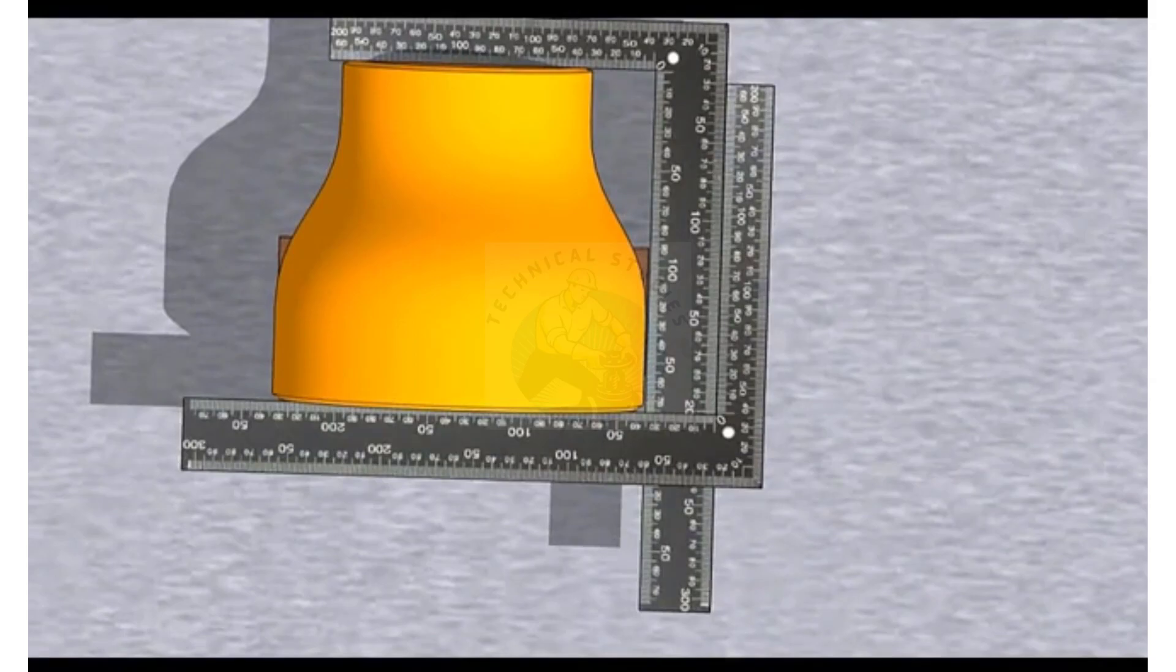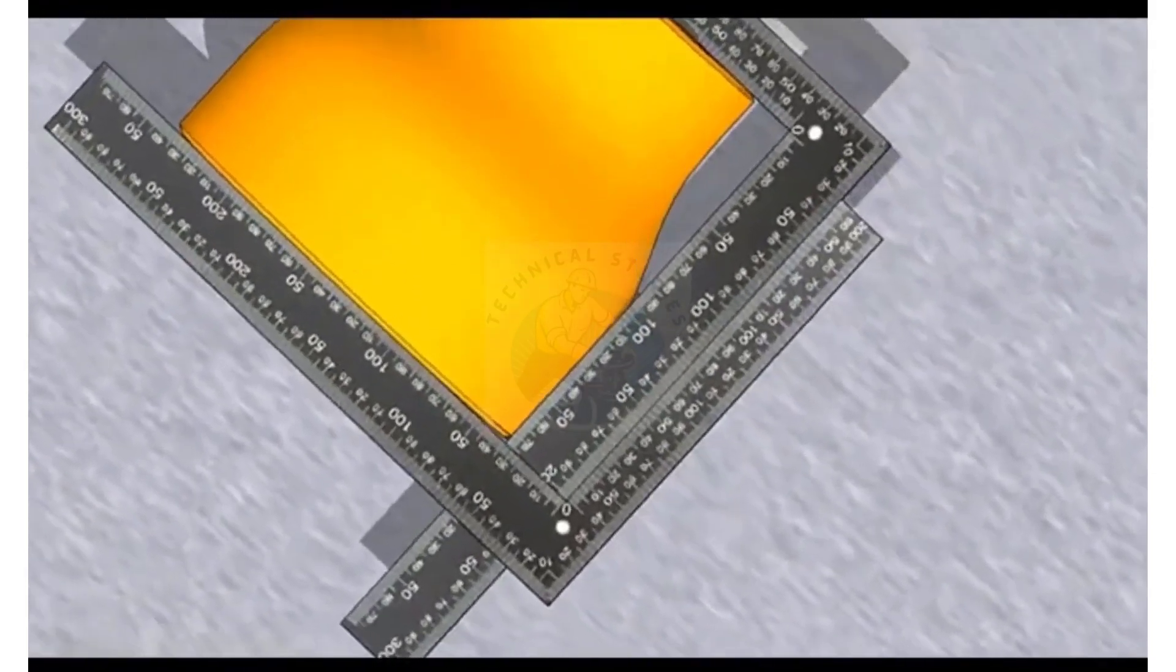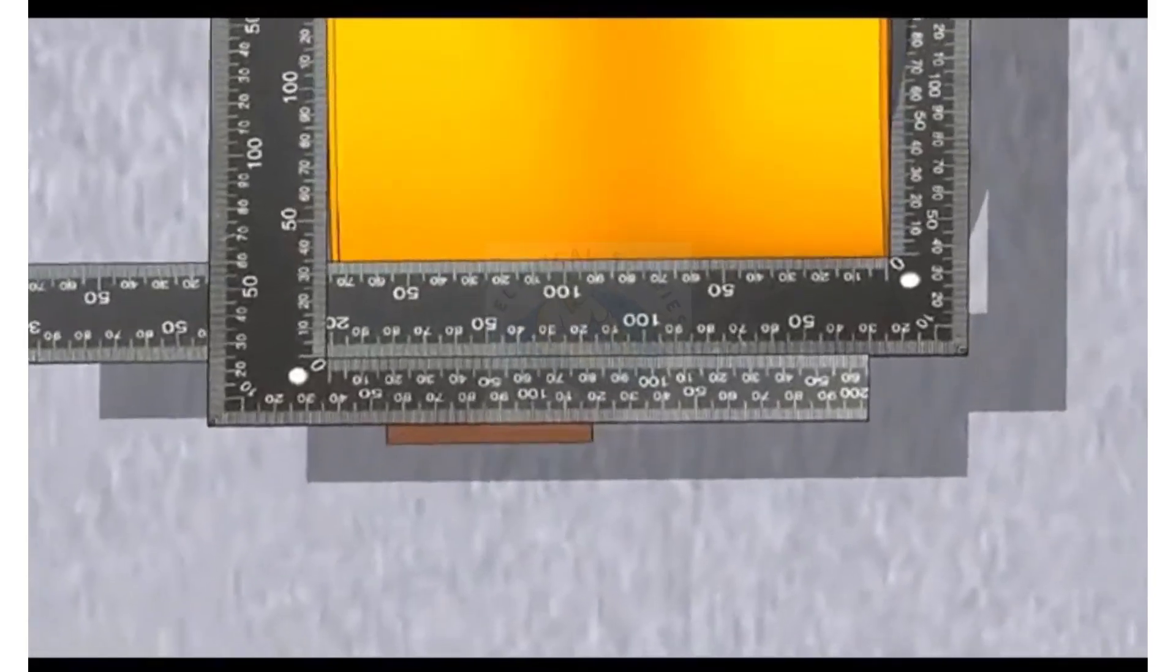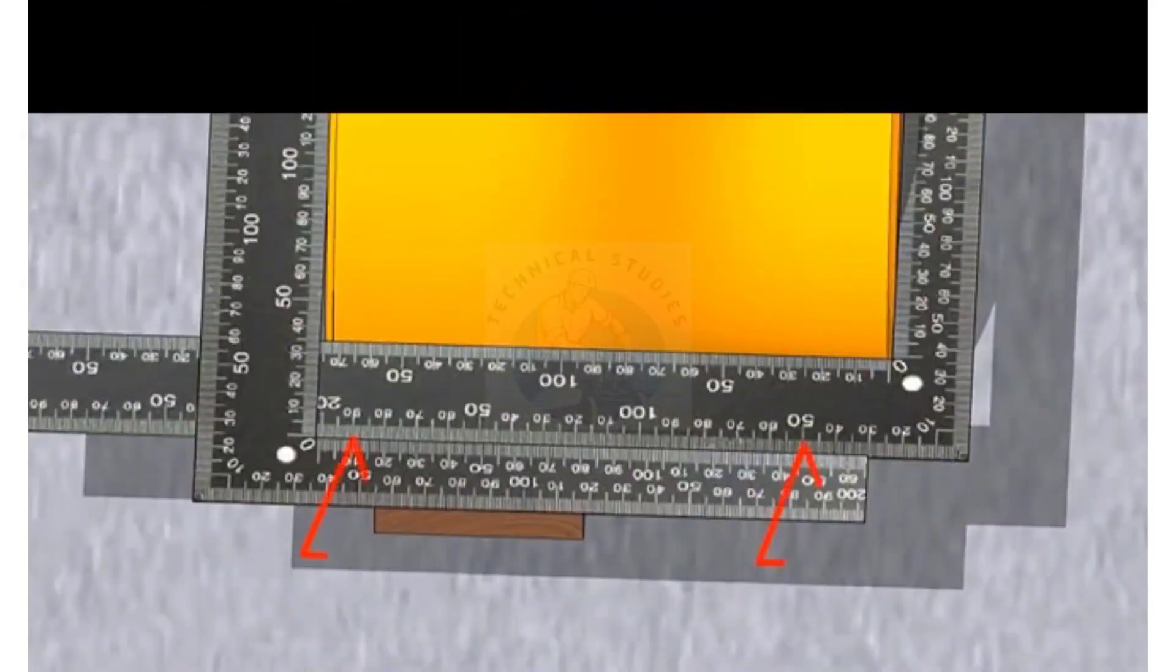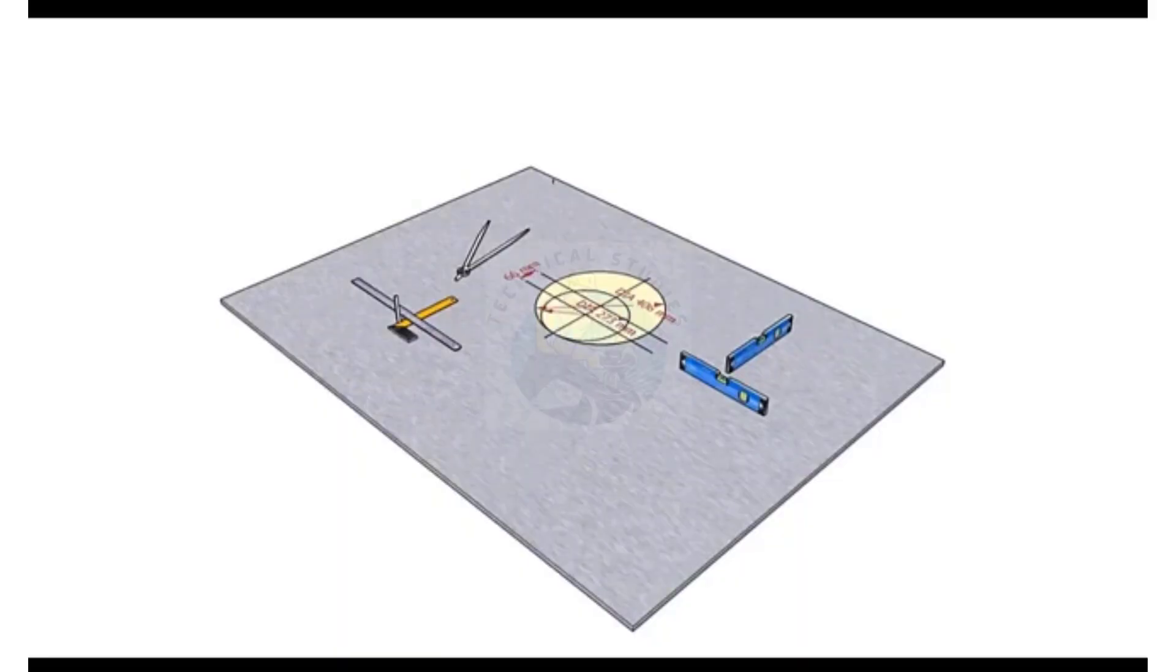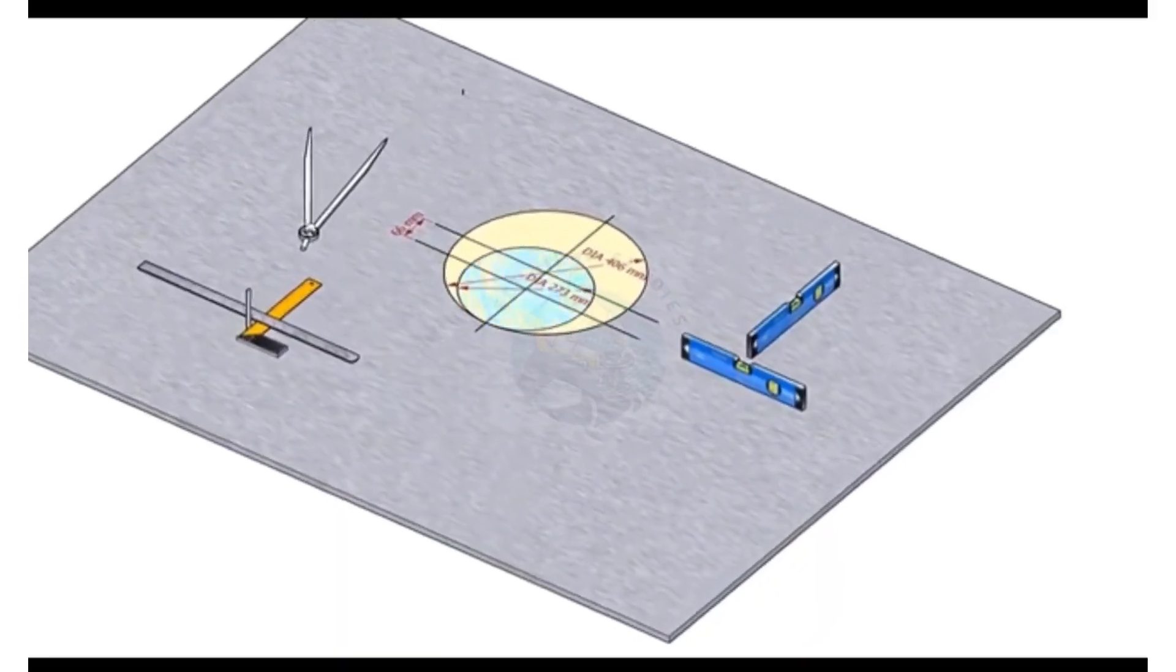Check if the other hands of the right angles are parallel to each other. The reducer is almost okay. Let us mark the center line.